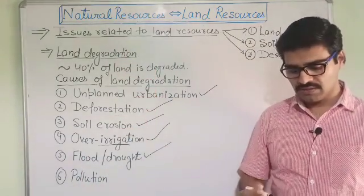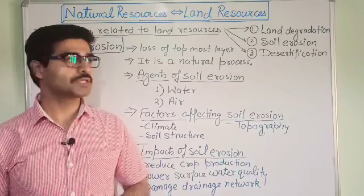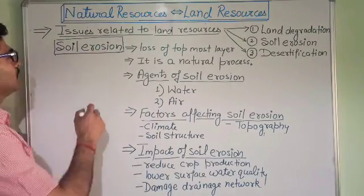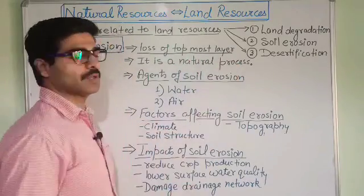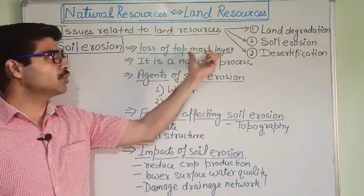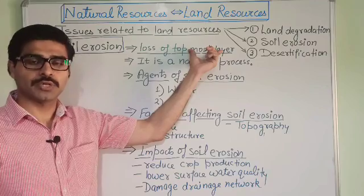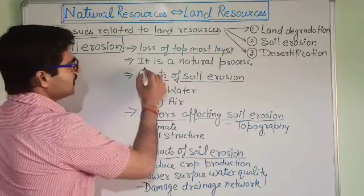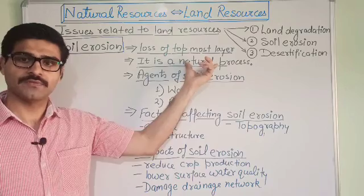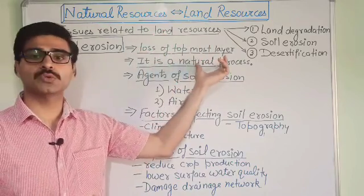The second problem related to land resources is soil erosion. Soil erosion is the loss of the topmost layer from the soil. That topmost layer is very fertile and rich in nutrients, so this is very important for agricultural productivity. This process is a natural process because wind, water, flood, and drought are factors which cause soil erosion. The two main agents responsible for soil erosion are water and air.